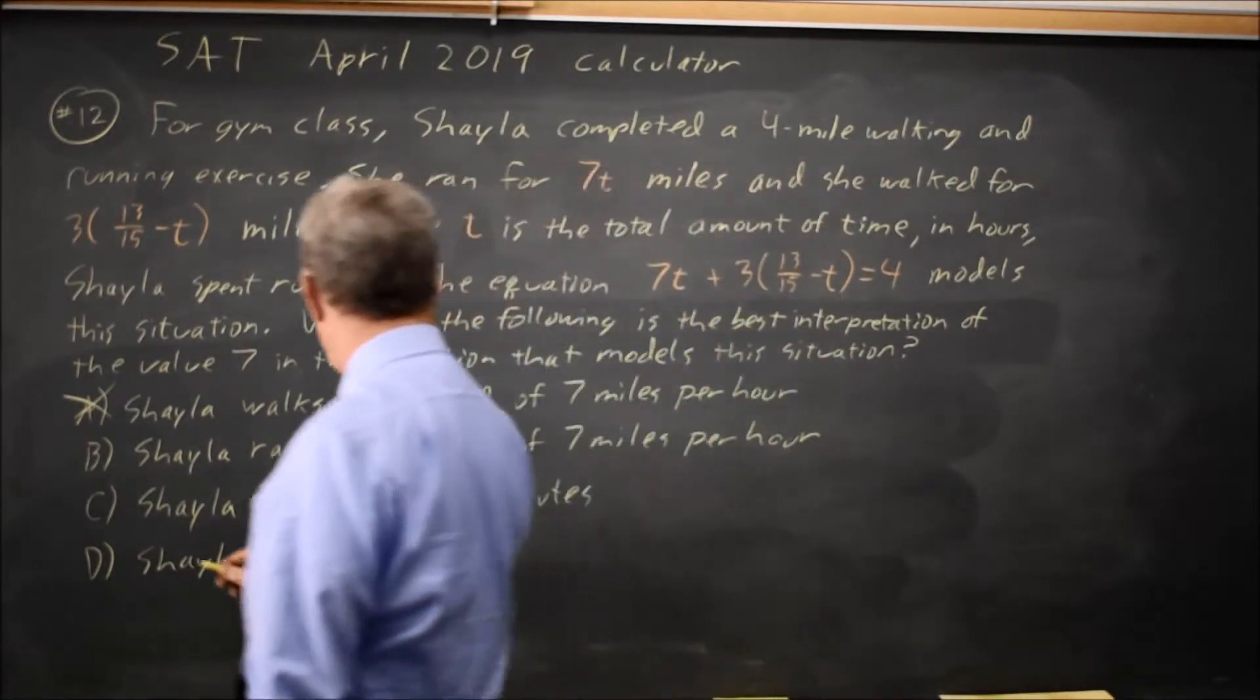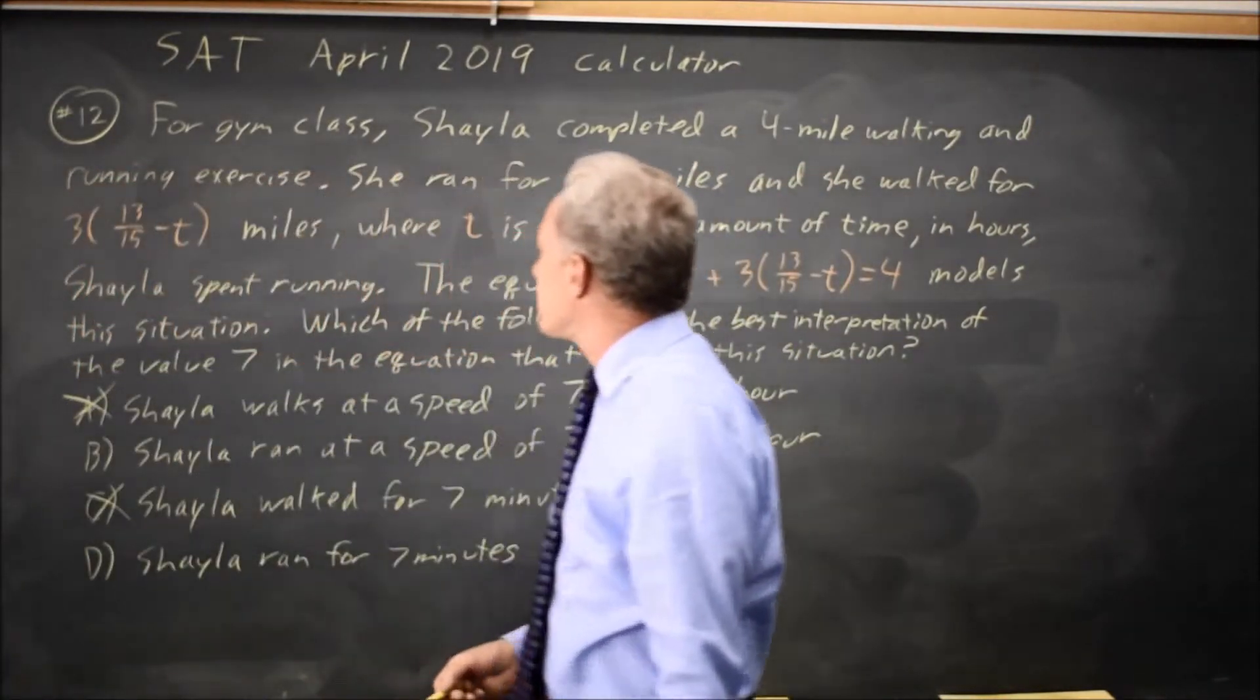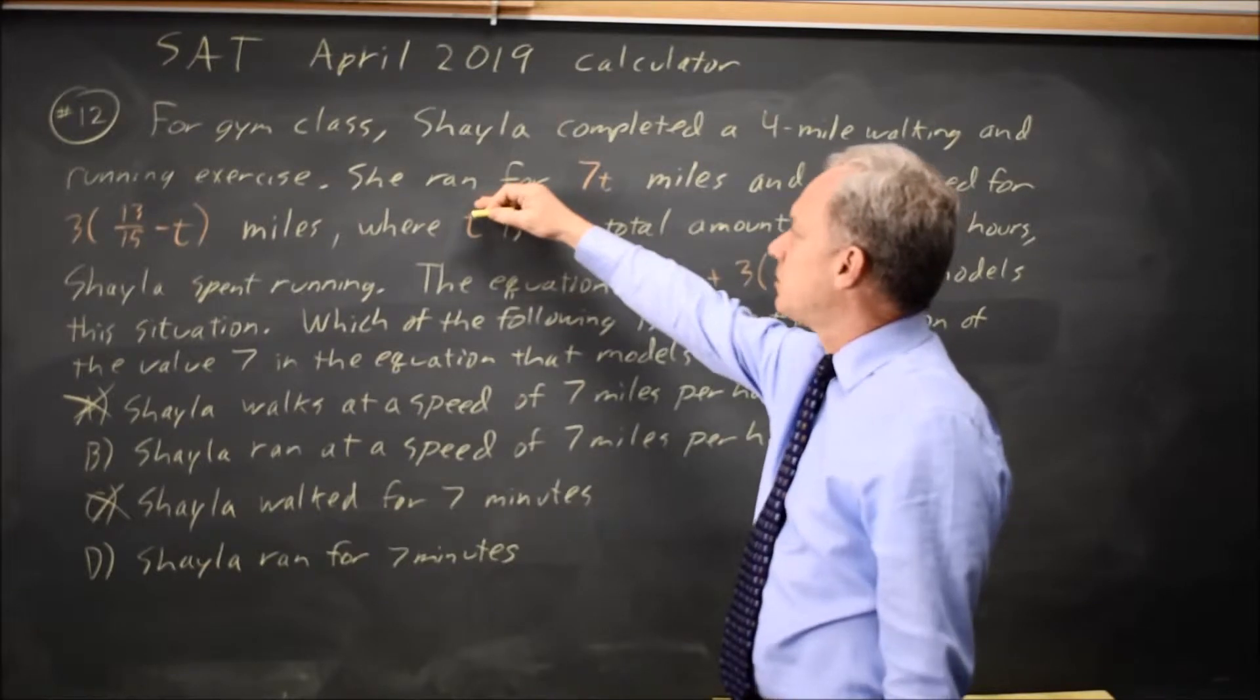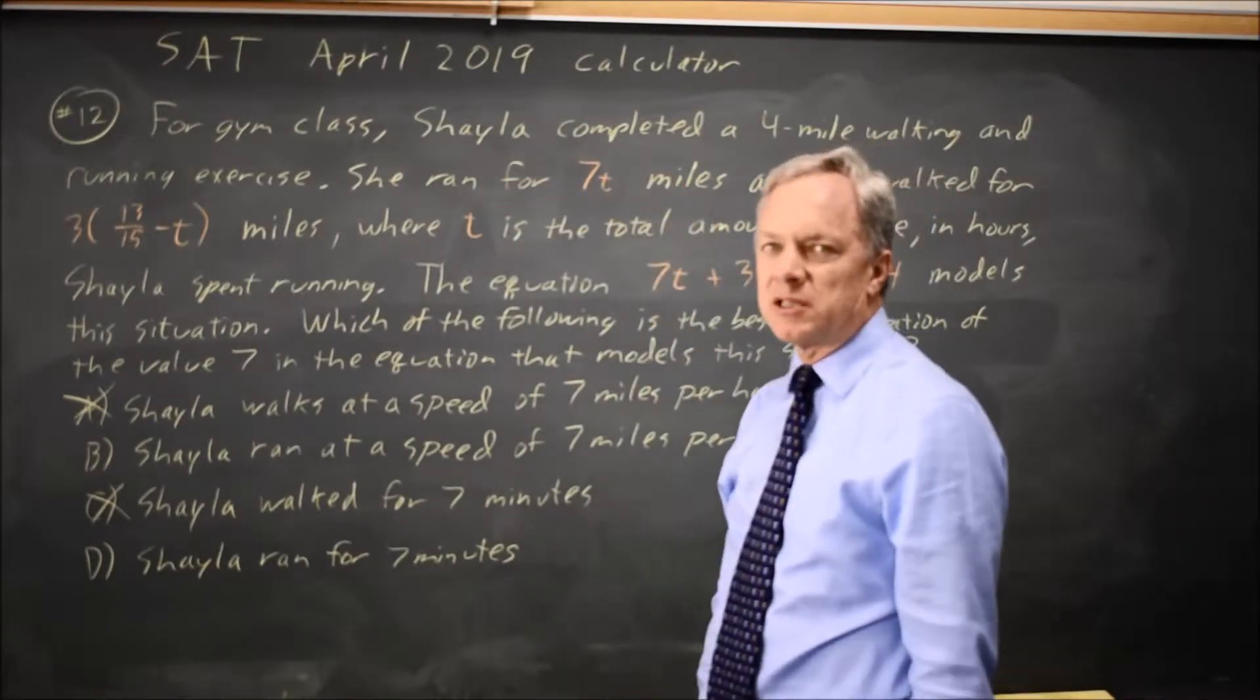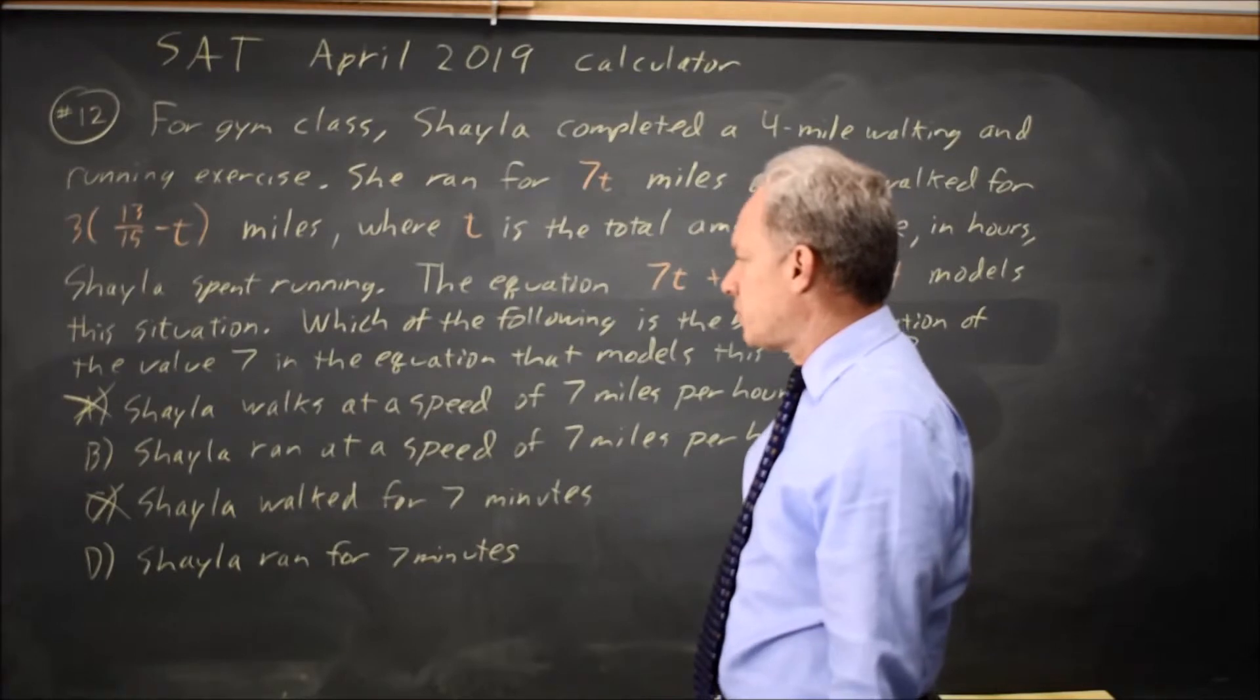And choice C, Shayla walks for 7 minutes, also does not fit because again, the 7t is she ran for 7 times t miles, and that is not about her walking.